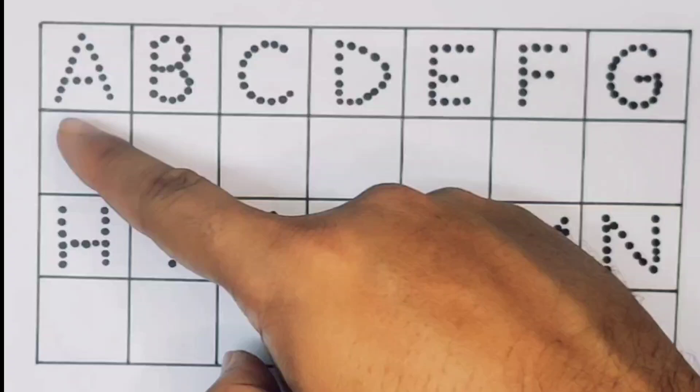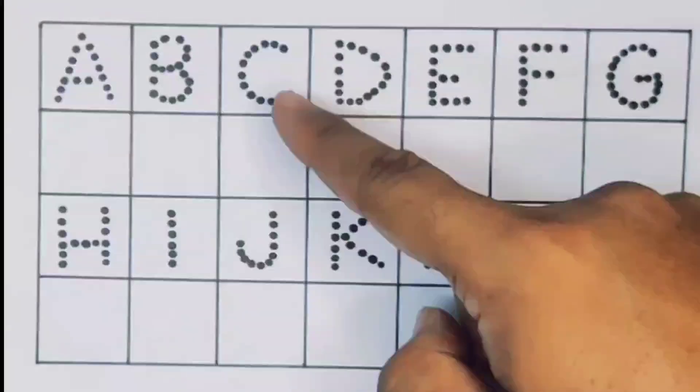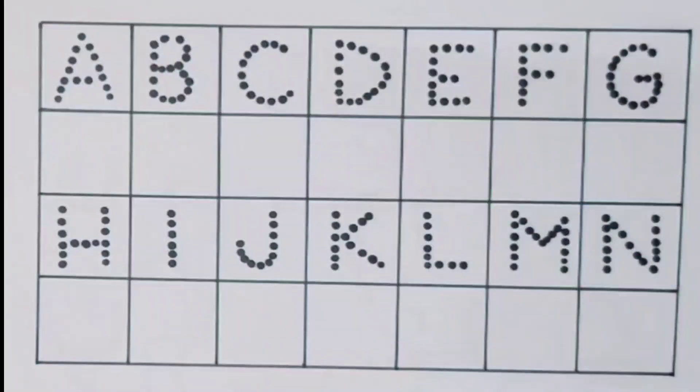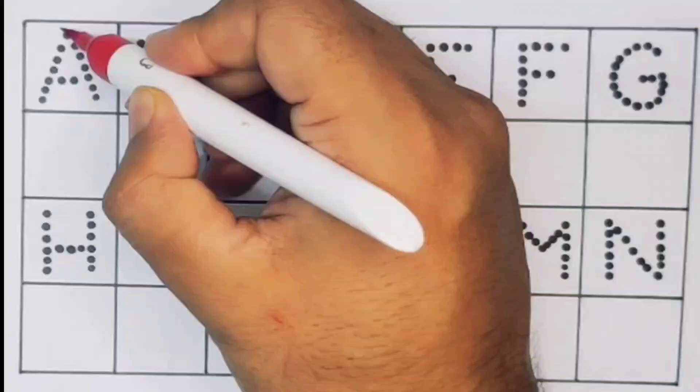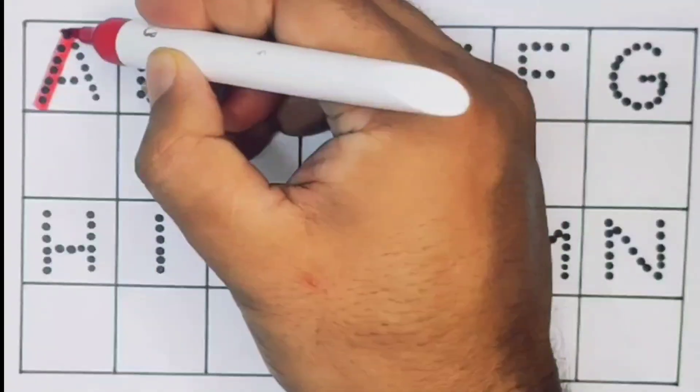Now let's learn the alphabet A B C D. First A, A for aeroplane.